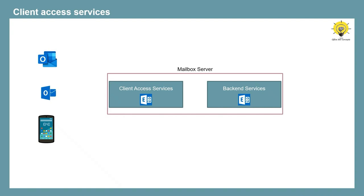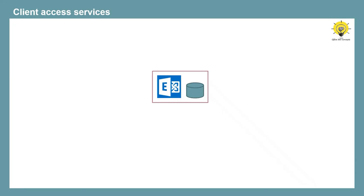The client access services in Exchange Server works like a front door for the client applications. It accepts all the client connection requests and routes them to the correct mailbox database. There are multiple applications that can be used to access a mailbox — for example, Outlook client, OWA or Outlook on the web, and mobile applications. All these applications use client access services in Exchange Server to connect to the mailboxes.